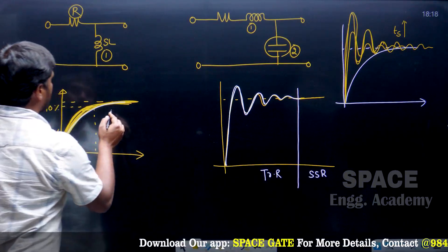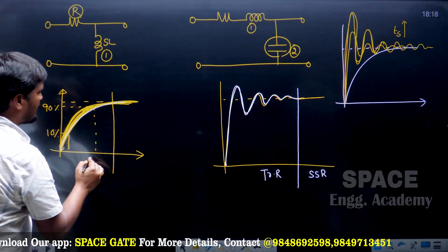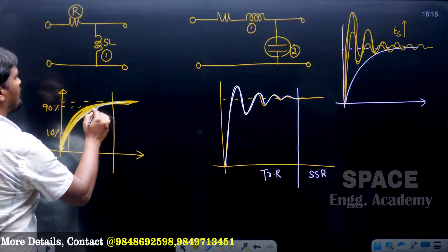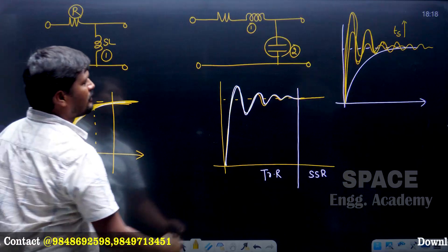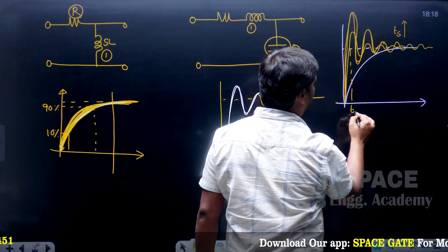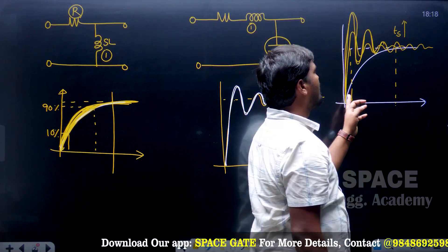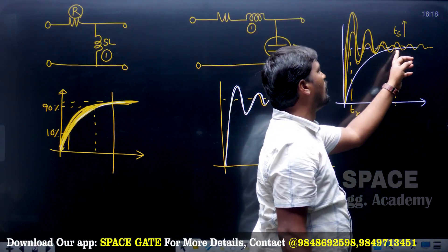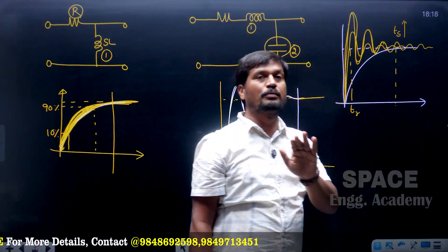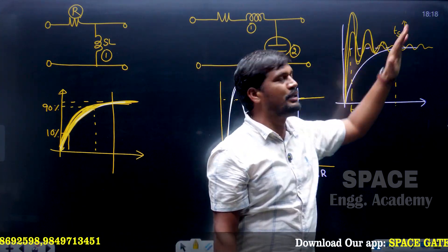But coming to the first-order system, the rise time is very large. Rise time is defined as the time taken by the system to reach 100% of its final value for second-order systems. The rise time for the second-order system occurs here, whereas the rise time for the first-order system is much later. When transient elements are less, rise time is more; when transient elements are more, rise time is very quick — meaning output comes very quickly, but settling time is more.